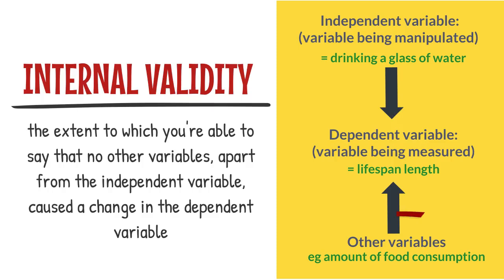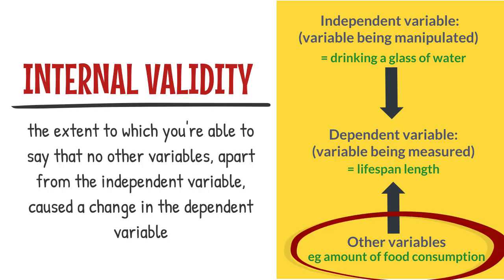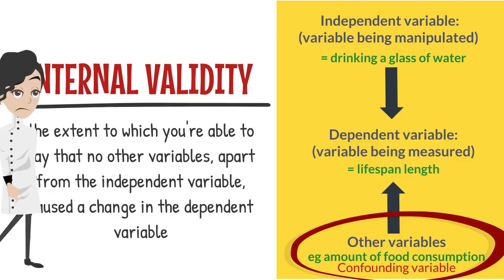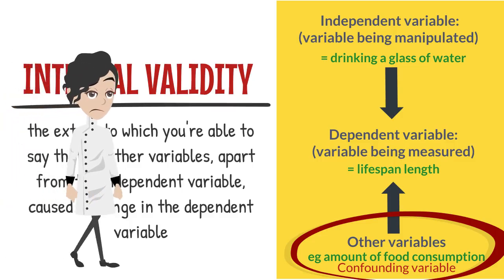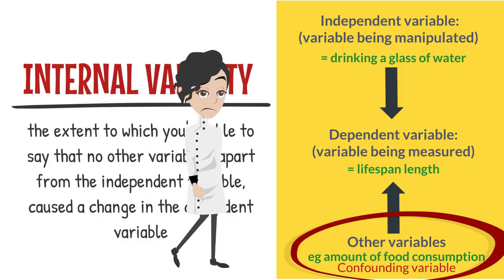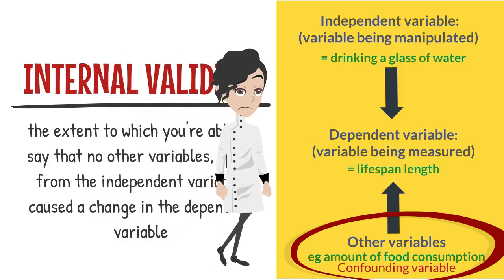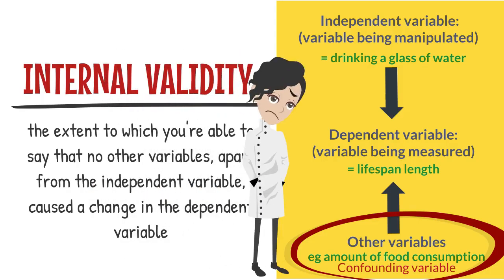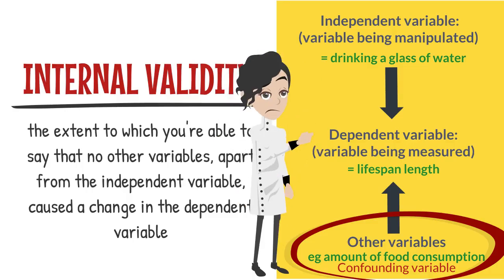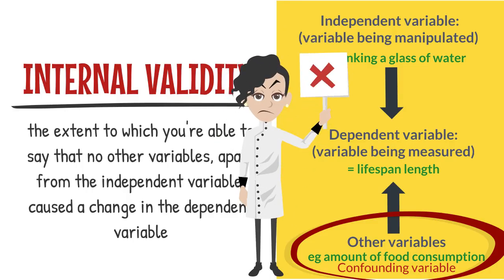Factors other than the independent variable that may influence the outcome of the experiment are called confounding variables. So for this example, lack of food is a confounding variable in the lifespan study. Given that variables other than the independent variable can influence the dependent variable, this study has poor internal validity.